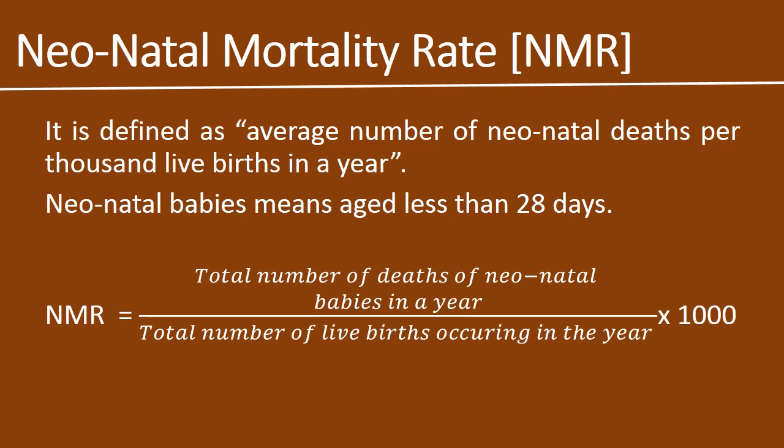The definition is: average number of neonatal deaths per thousand live births in a year — considering only live births, not still births. The formula for NMR is: total number of deaths of neonatal babies in a year, divided by total number of live births occurring in the year, multiplied by one thousand.